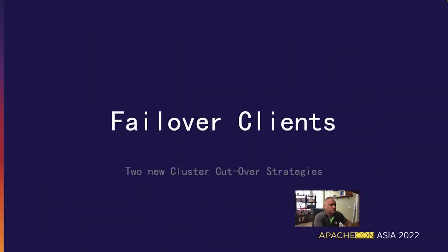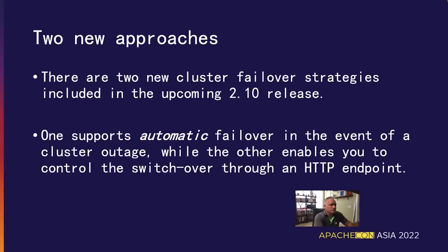Starting with release 2.10 of Pulsar, we have added a new feature called Failover Clients that solves these types of problems. There are two distinct types of failover clients available in this release. The first will automatically reroute your client connections to a different Pulsar cluster as soon as it detects a cluster outage. The second allows you to trigger the failover through an exposed HTTP endpoint, which the client periodically invokes to get the correct connection details. This approach allows your admins to have more control over the failover process. Both have their advantages and disadvantages.